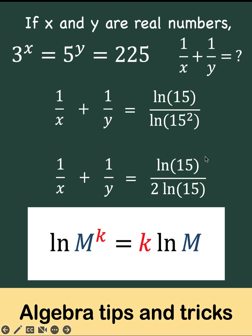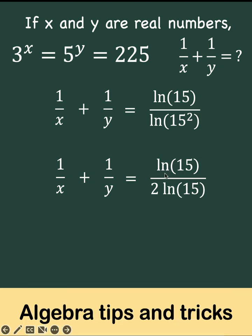And notice now that ln of 15 and ln of 15 are the same. So dividing now, ln of 15 divided by ln of 15, the numerator becomes 1. And therefore, 1 over x plus 1 over y equals 1 half.